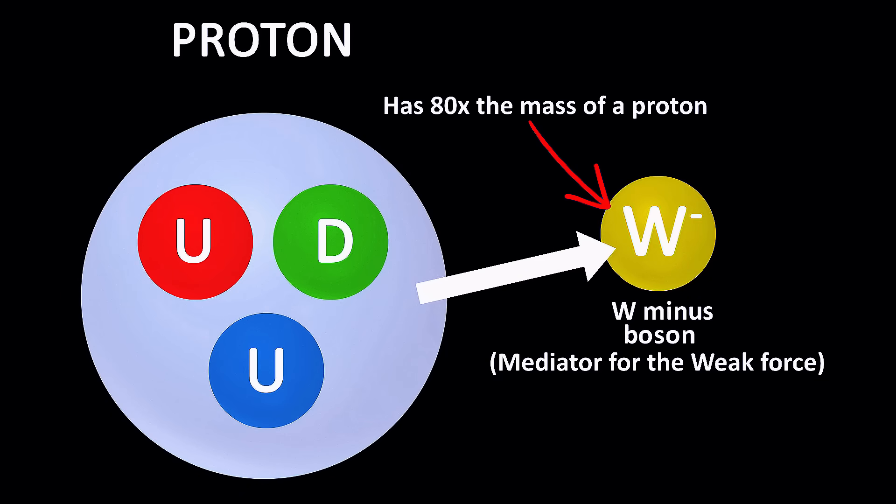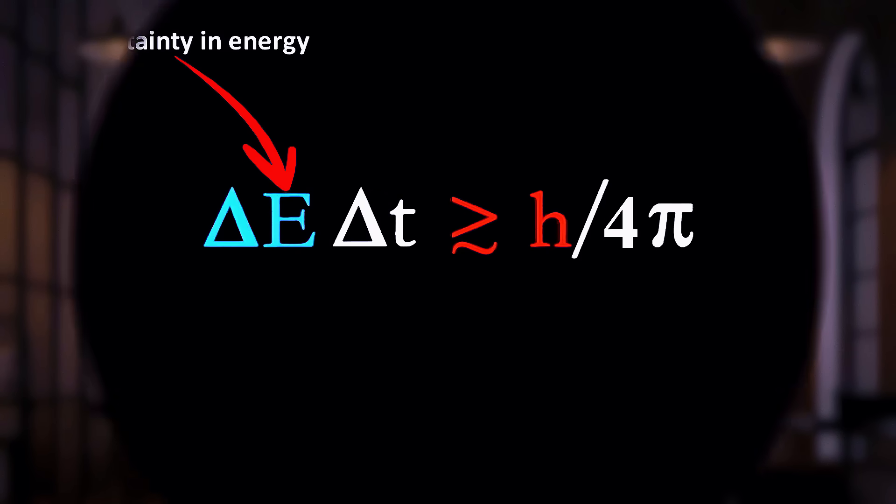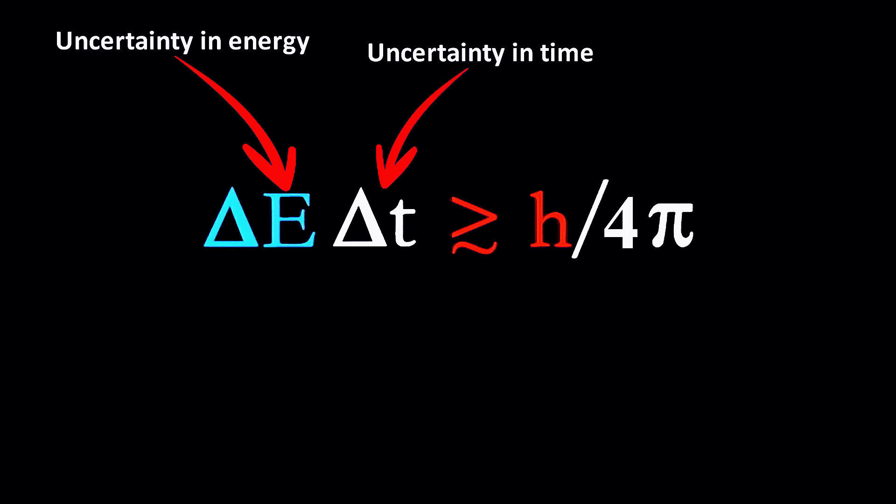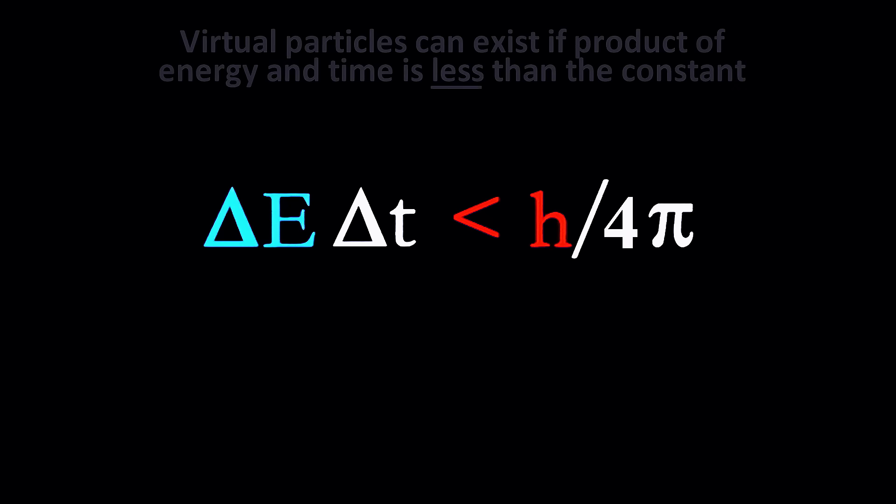Now you might ask, how can something 80 times the mass of a proton be created inside a proton? Well, the nature of quantum mechanics is such that there is a probability that such a massive particle can be created, spontaneously. According to Heisenberg's uncertainty principle, such large energy fluctuations can exist, but only for a very brief amount of time. This makes the weak force short lived and localized.